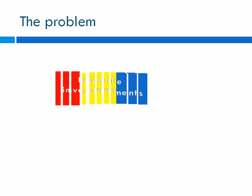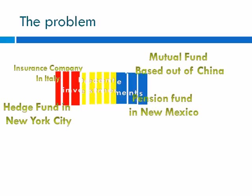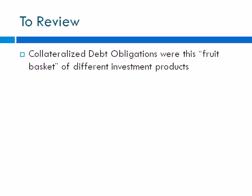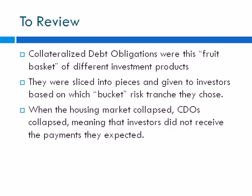The problem with fixing this was that the money was divided up between different funds and people from all around the world — an insurance company in Italy, a hedge fund in New York, a pension fund in New Mexico, or a mutual fund based out of China. Many financial engineers had sophisticated computer programs tracking every loan, but the larger question for the U.S. Treasury and government was figuring out how to pay back all those people who bought these complicated investment products. To review: collateralized debt obligations were a fruit basket of different investment products, sliced into pieces and given to investors based on which risk tranche they chose. When the housing market collapsed, CDOs collapsed, meaning investors did not receive the payments they expected.